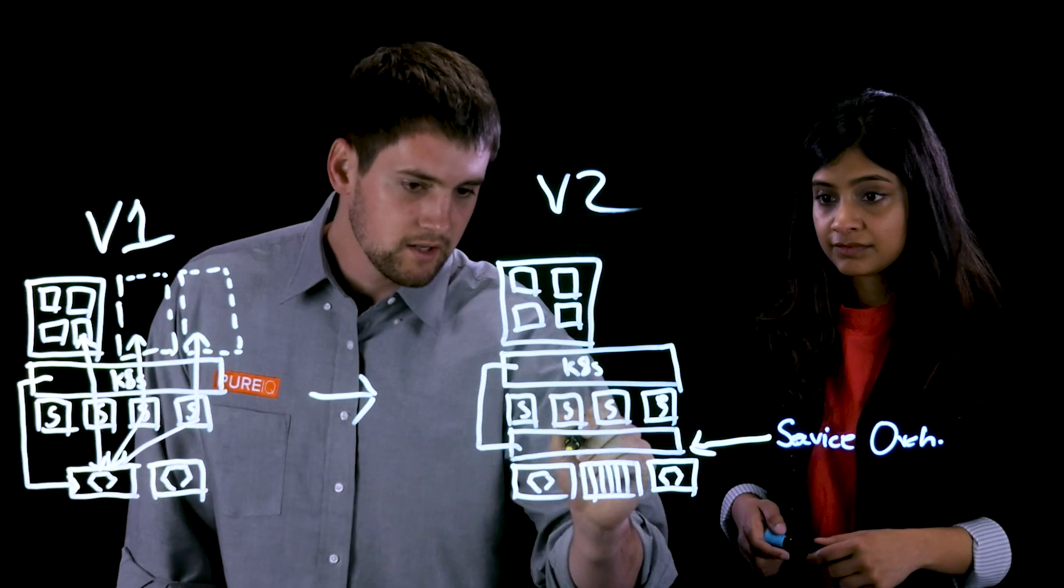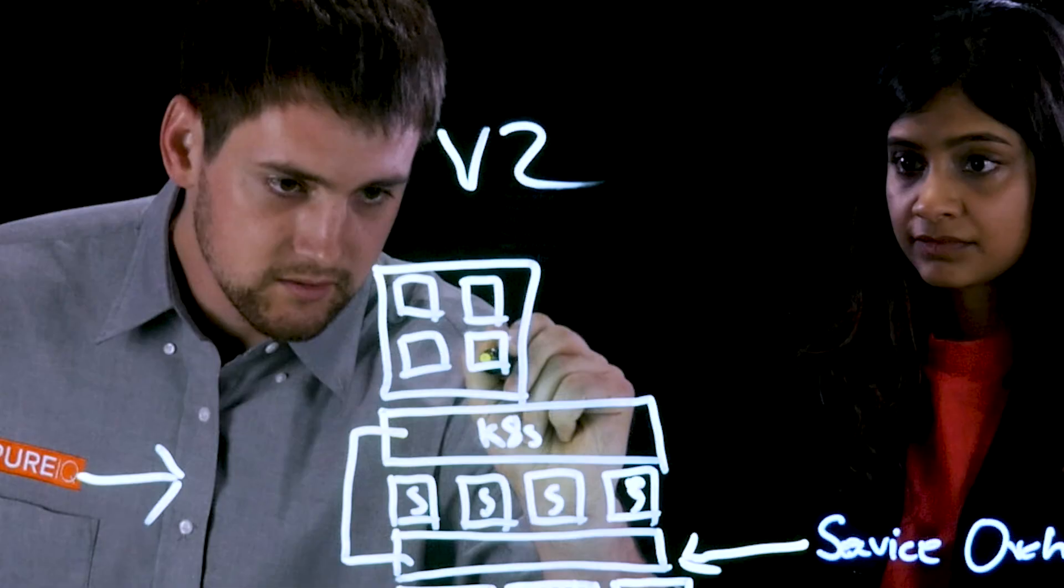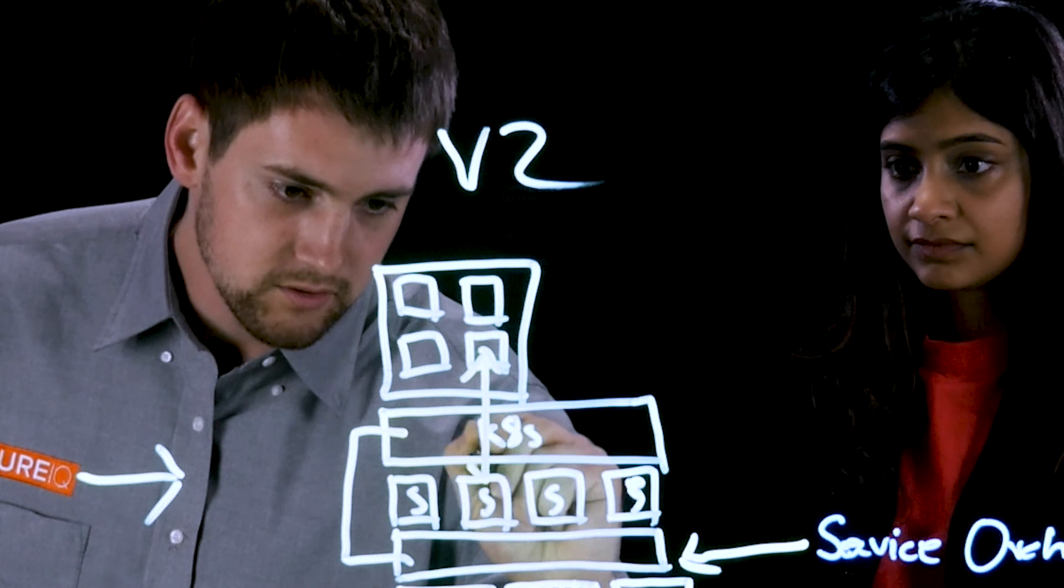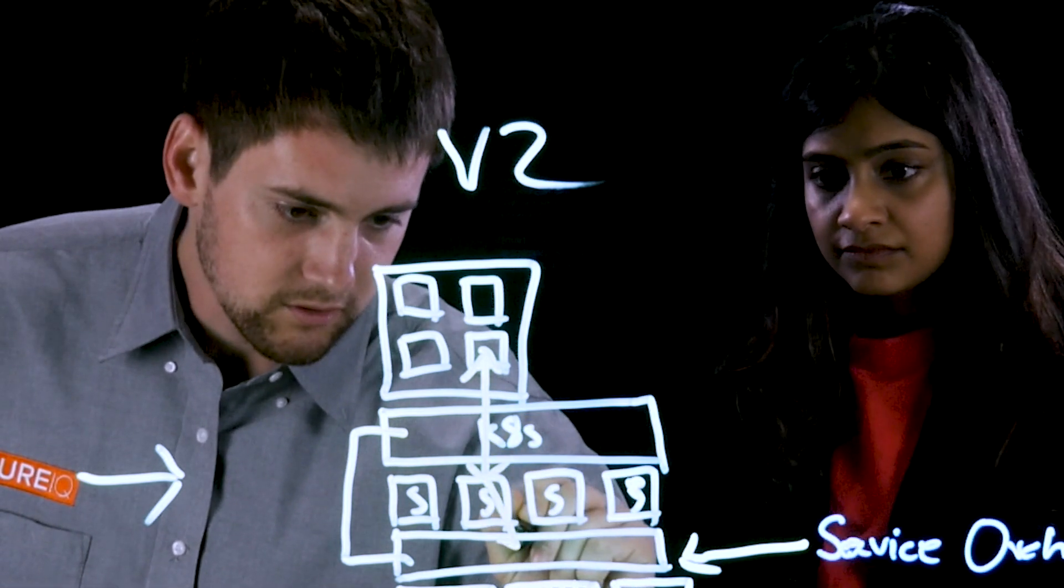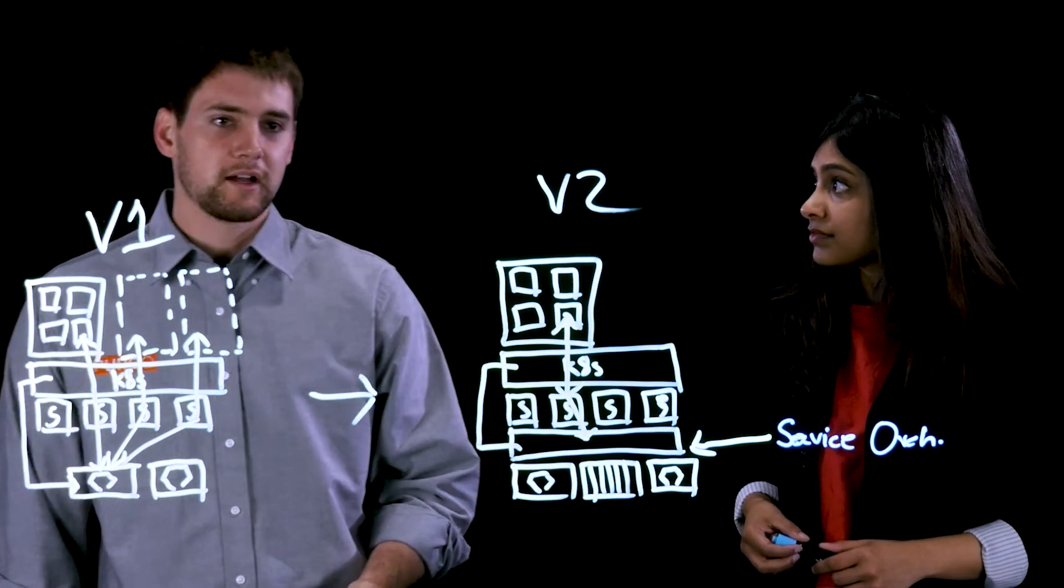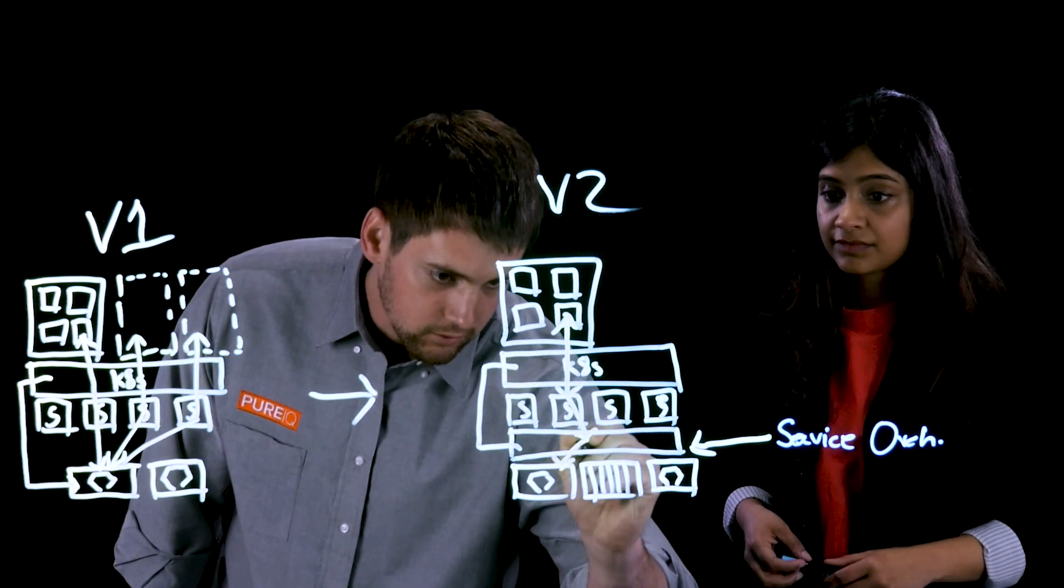And what this actually ends up doing is when you go in to create persistent storage for one of your containers, instead of connecting through from the container to the server and then to the array directly, it runs into the Service Orchestrator layer which then makes a smart provisioning decision based on whatever policy is required to assign that down to an underlying array.